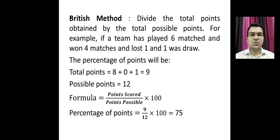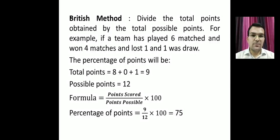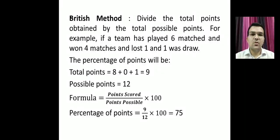There are two methods to score in a league. The first is the British method, in which we divide the total points scored by a team by the total points possible. For example, if a team played six matches, won four, lost one, and drew one, the total points scored are nine and the total possible points are twelve.